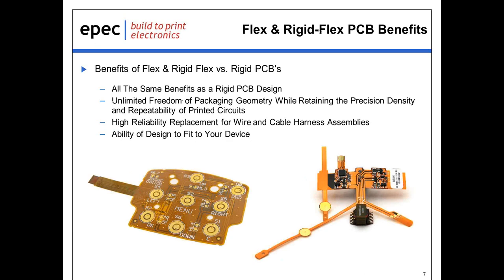Now moving on to flex and rigid flex technologies — these have all the same features as a rigid PCB design, but you pick up a couple of extras. You have unlimited freedom with flex and rigid flex for packaging geometries, including tight bend radii. They are a high-reliability replacement for a wire and cable harness assembly, allowing you to integrate a printed circuit card and a wire harness into one unit. As you can see in the pictures below, we can wrap these around many different form factors to fit your design.